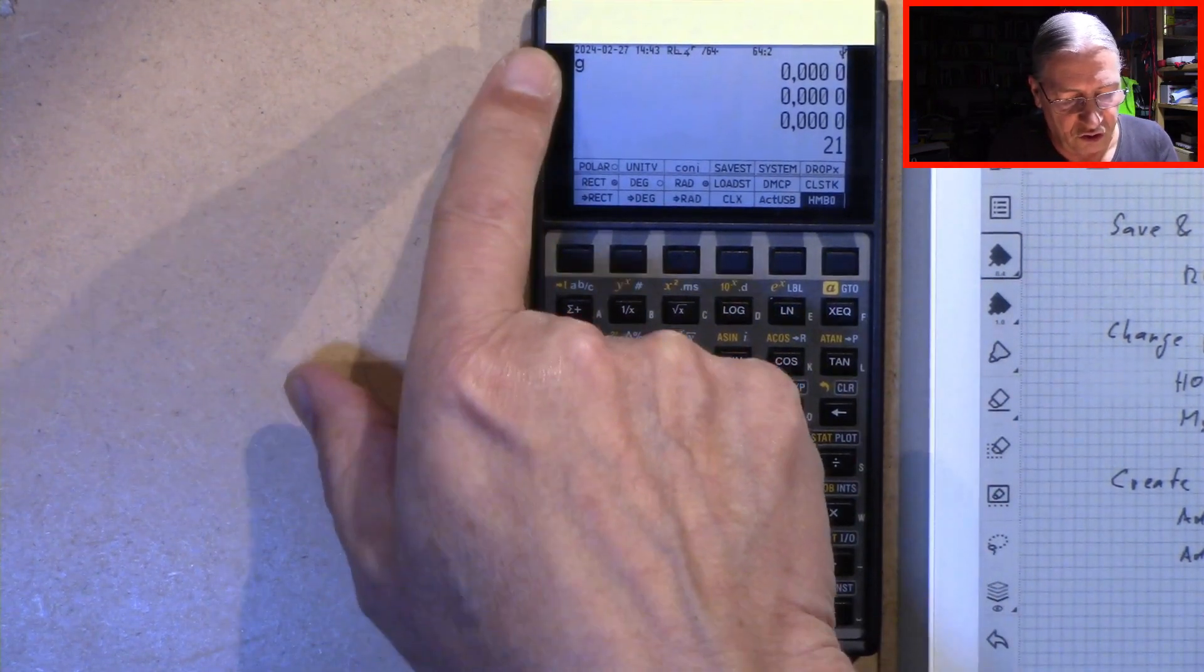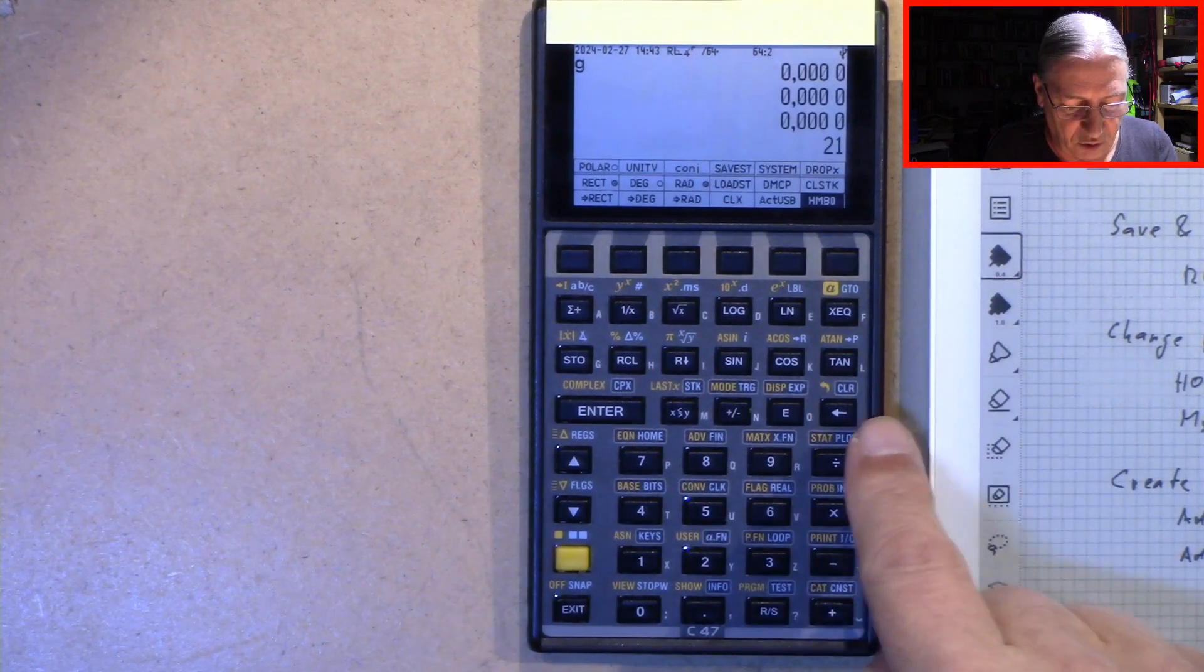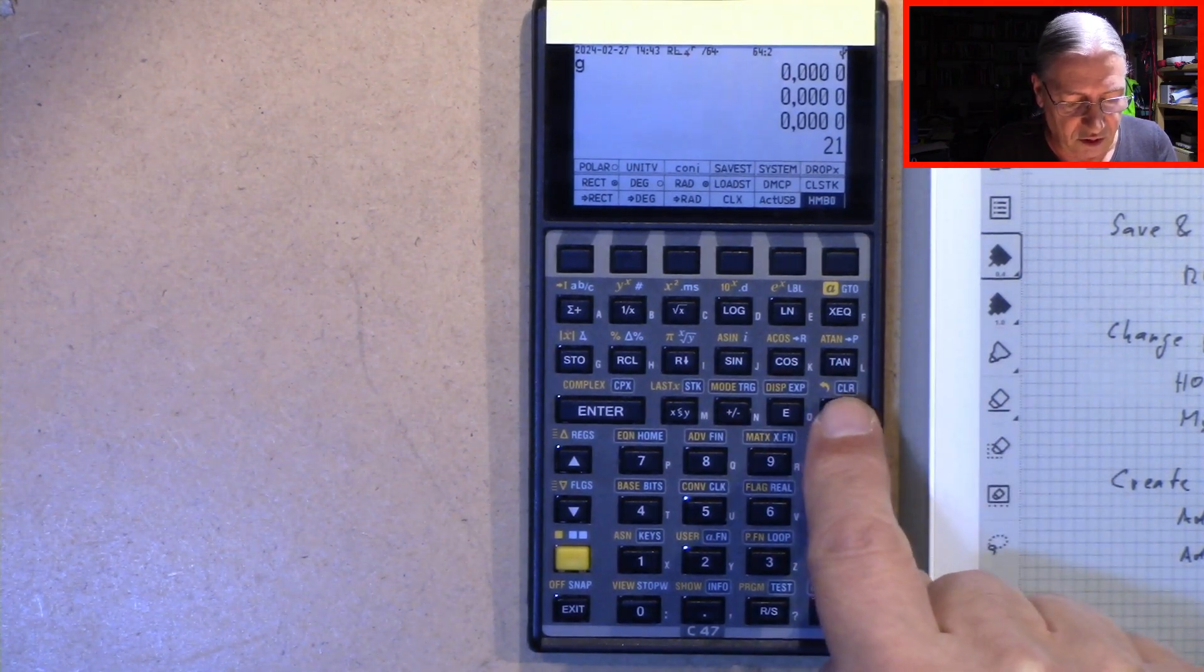Now we are in the G shift state and I press the backspace button which gives us the clear menu.